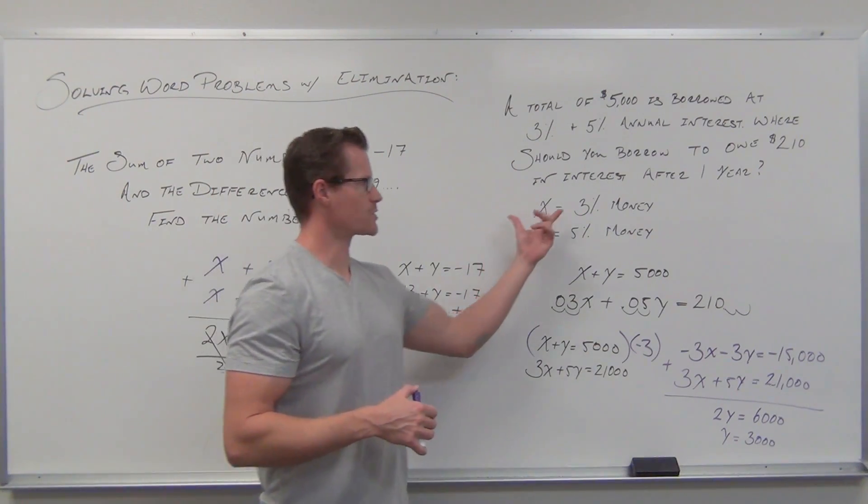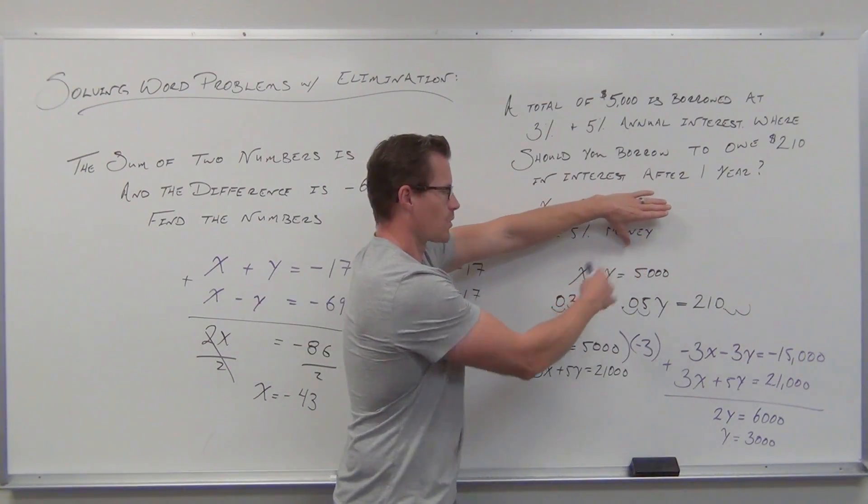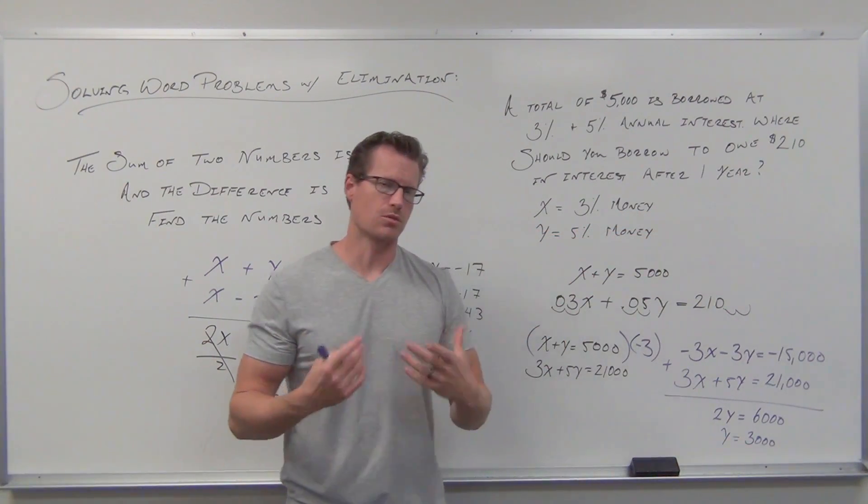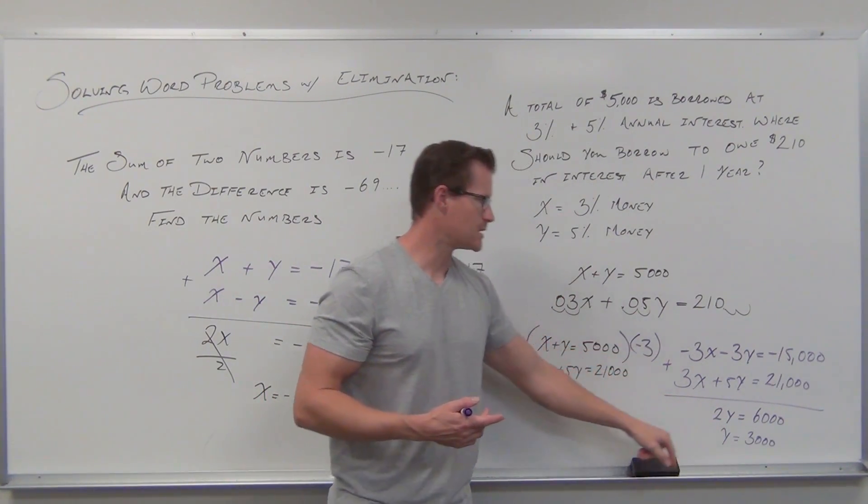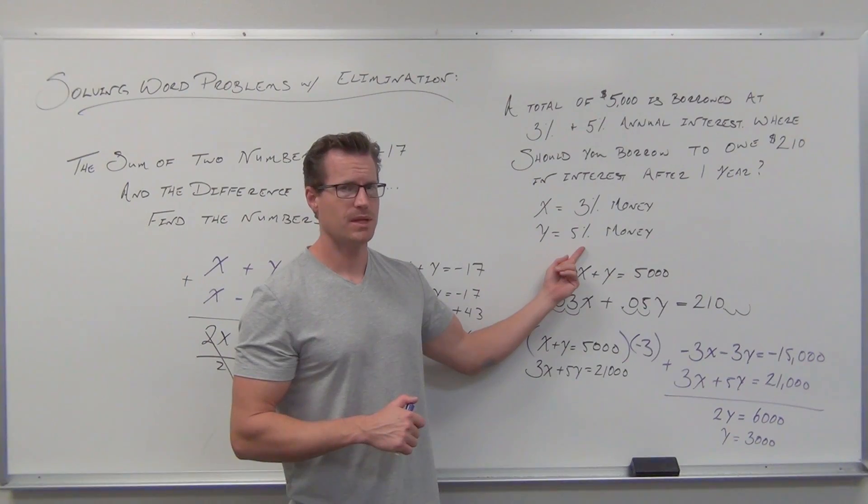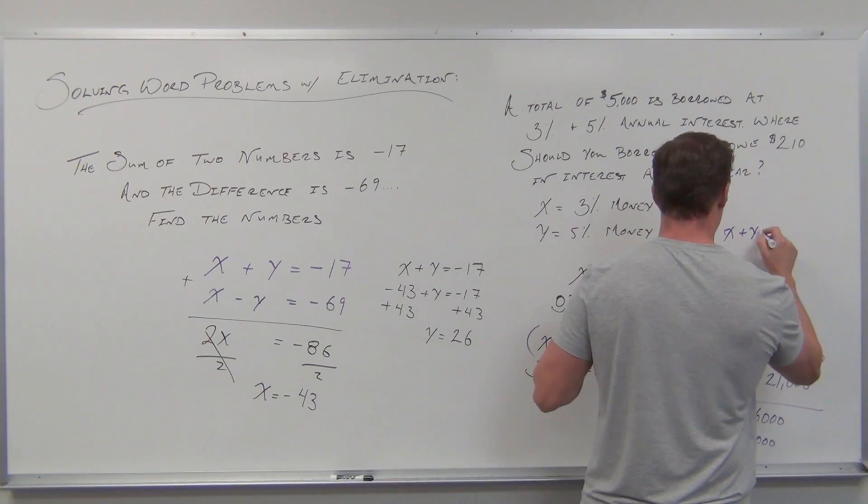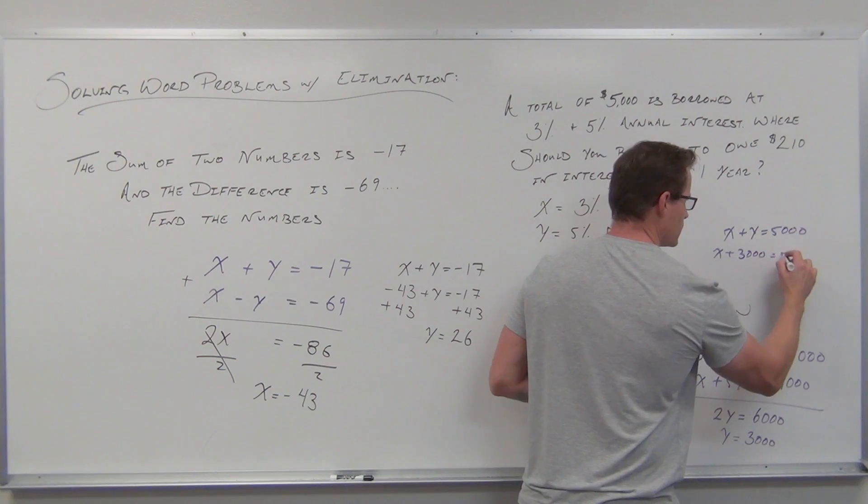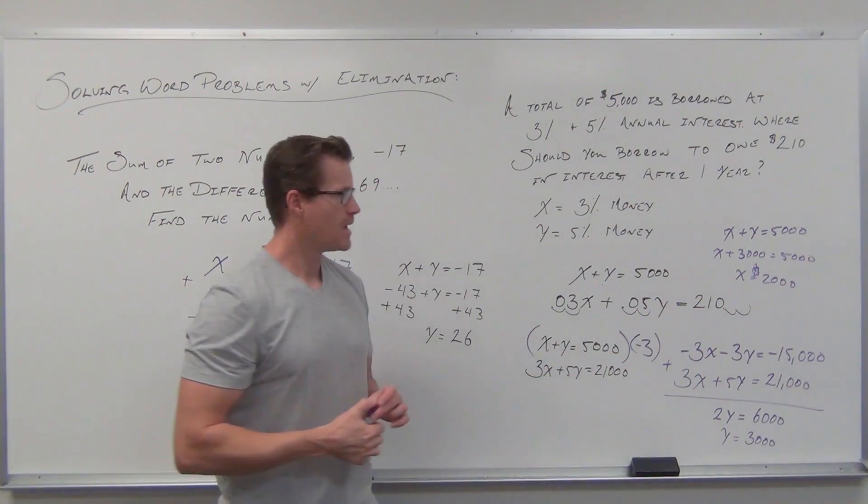Here's why we write out what our variables equal before we start problems - it can get confusing. What's the 3,000 mean? You have to look at where your variables are. Is it 3% money or 5% money? That's really easy to see now. I know $3,000 should be borrowed at 5%. If y is 3,000, then x is 2,000.